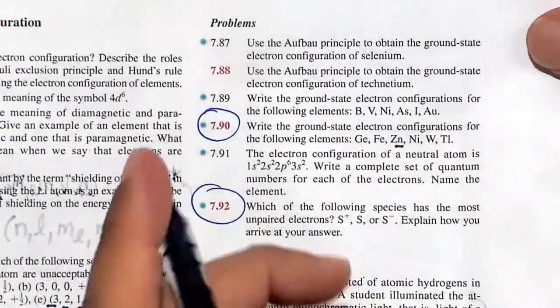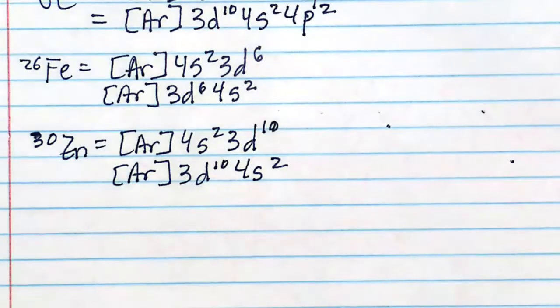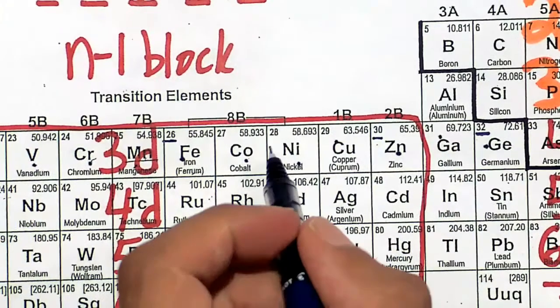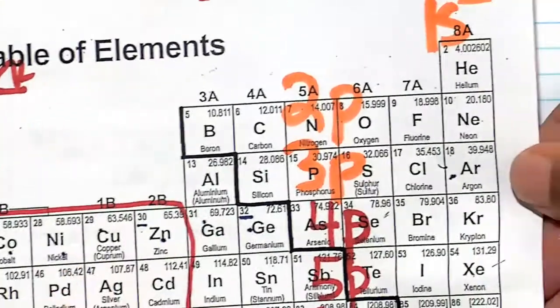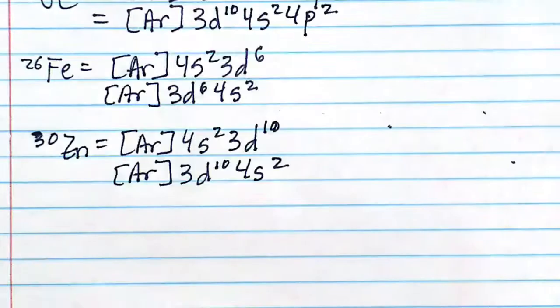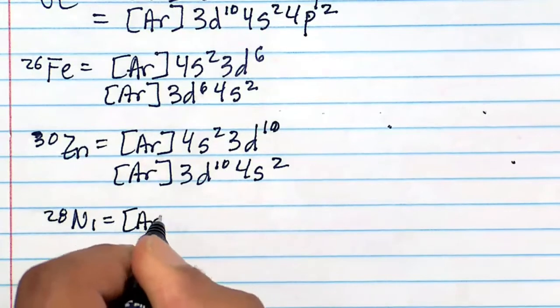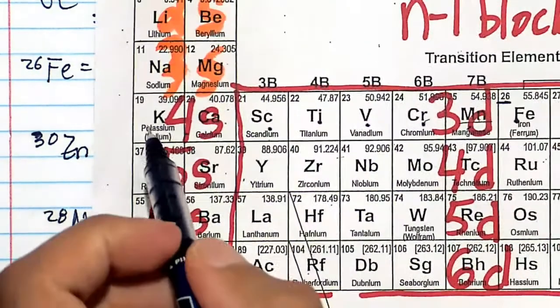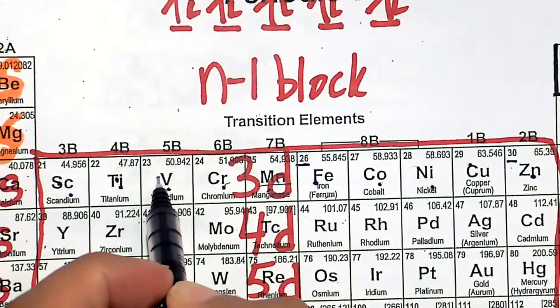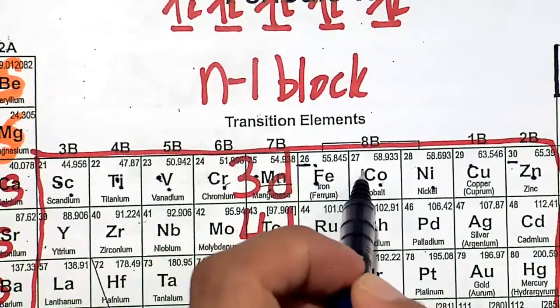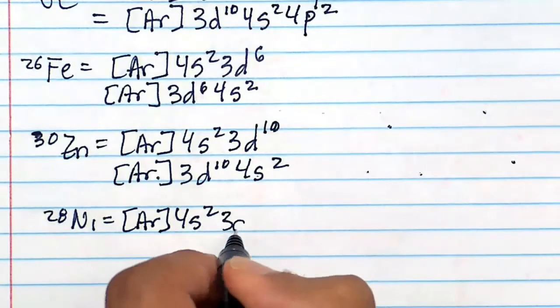The next one on this list is nickel. Nickel is going to be right here. Nickel is 28. So 28 electrons, how will they fill up? Well, 18 are going to come from argon. We got 18 from argon, and then 4s2. After 4s, it goes to 3d, 3d8. Nickel is going to be argon, 4s2, 3d8.